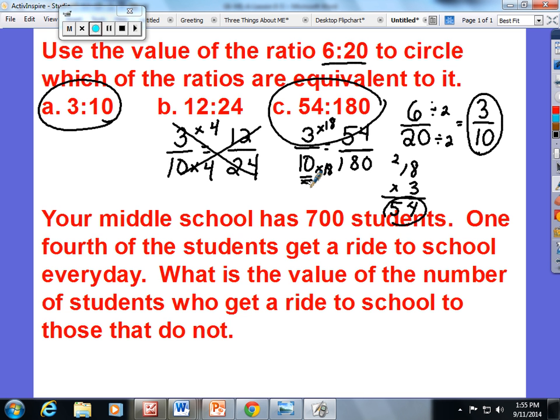The second example that might help you today: your middle school has 700 students. One fourth of the students get a ride to school every day. What is the value of the number of students who get a ride to school to those that do not? Okay, one fourth I'm going to set up that fraction and I'm going to label it. One fourth of the students get a ride, so the numerator is how many students get a ride.